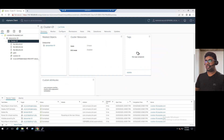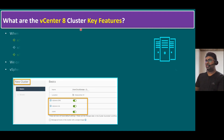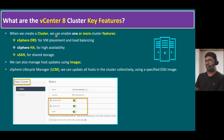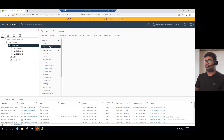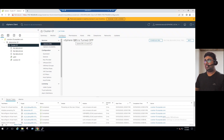Going back to the slides, when we create a cluster we can enable one or more cluster features. One feature is vSphere DRS — Distributed Resource Scheduler — specifically for VM placement and load balancing. If I enable DRS in our lab system — currently DRS is in a turned-off state — clicking Edit and turning on, the purpose of DRS is load balancing.